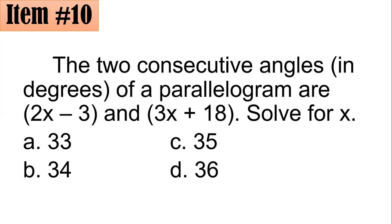From here, we have to recall the fact that any two consecutive angles of a parallelogram are always supplementary. Hence, their sum has to be 180 degrees. That is why we have the equation 2x minus 3 plus 3x plus 18 equals 180.